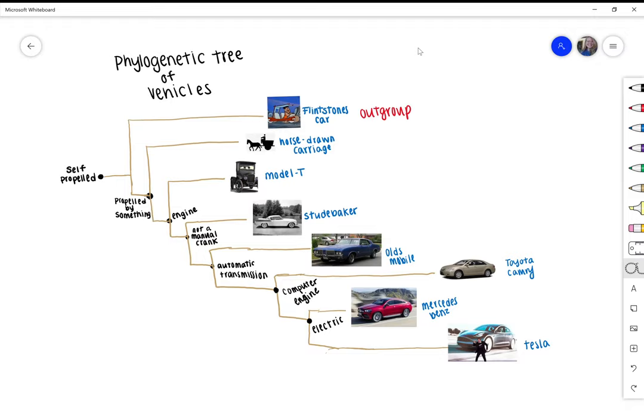So I'm doing prompt 7-1. I am doing a phylogenetic tree of vehicles.